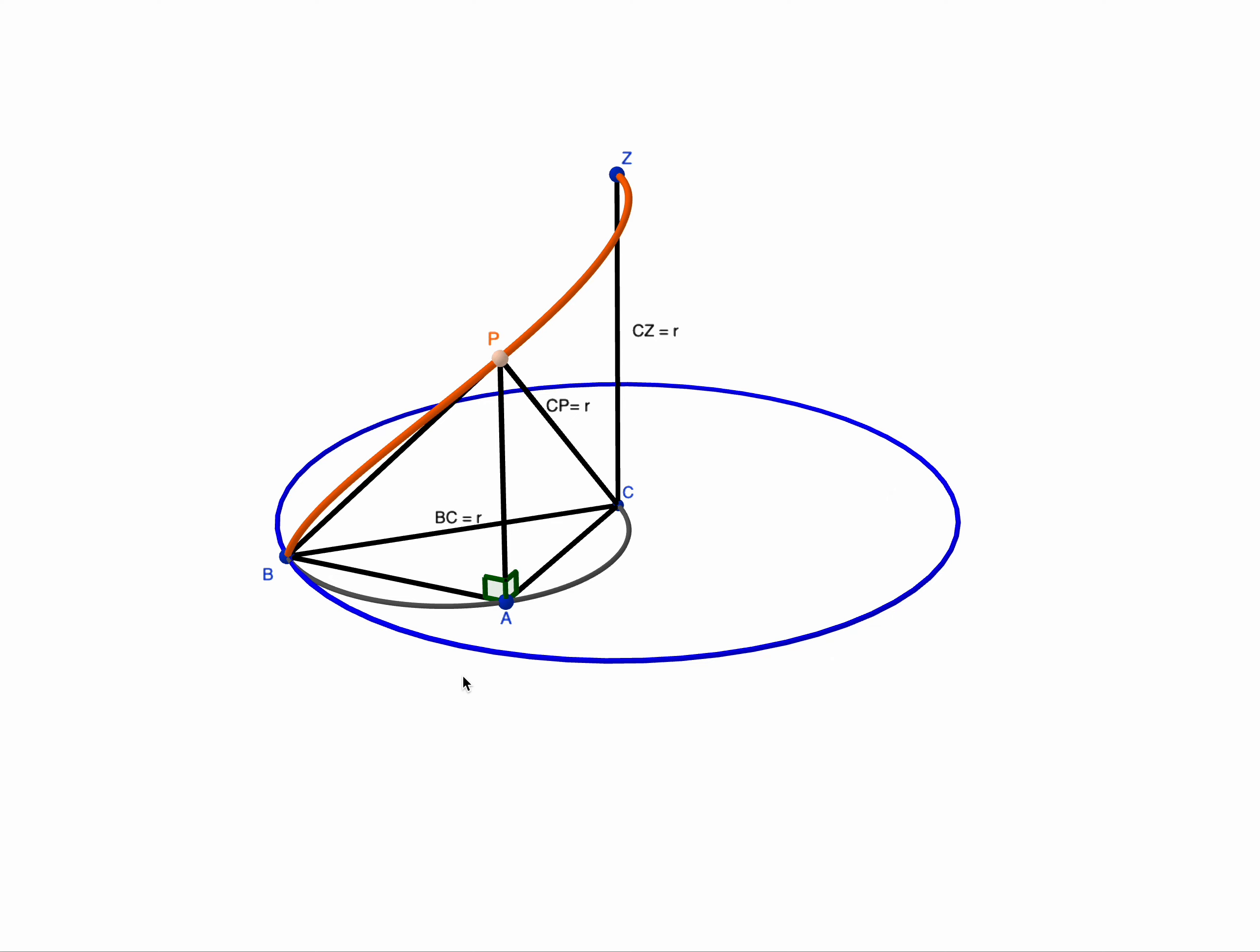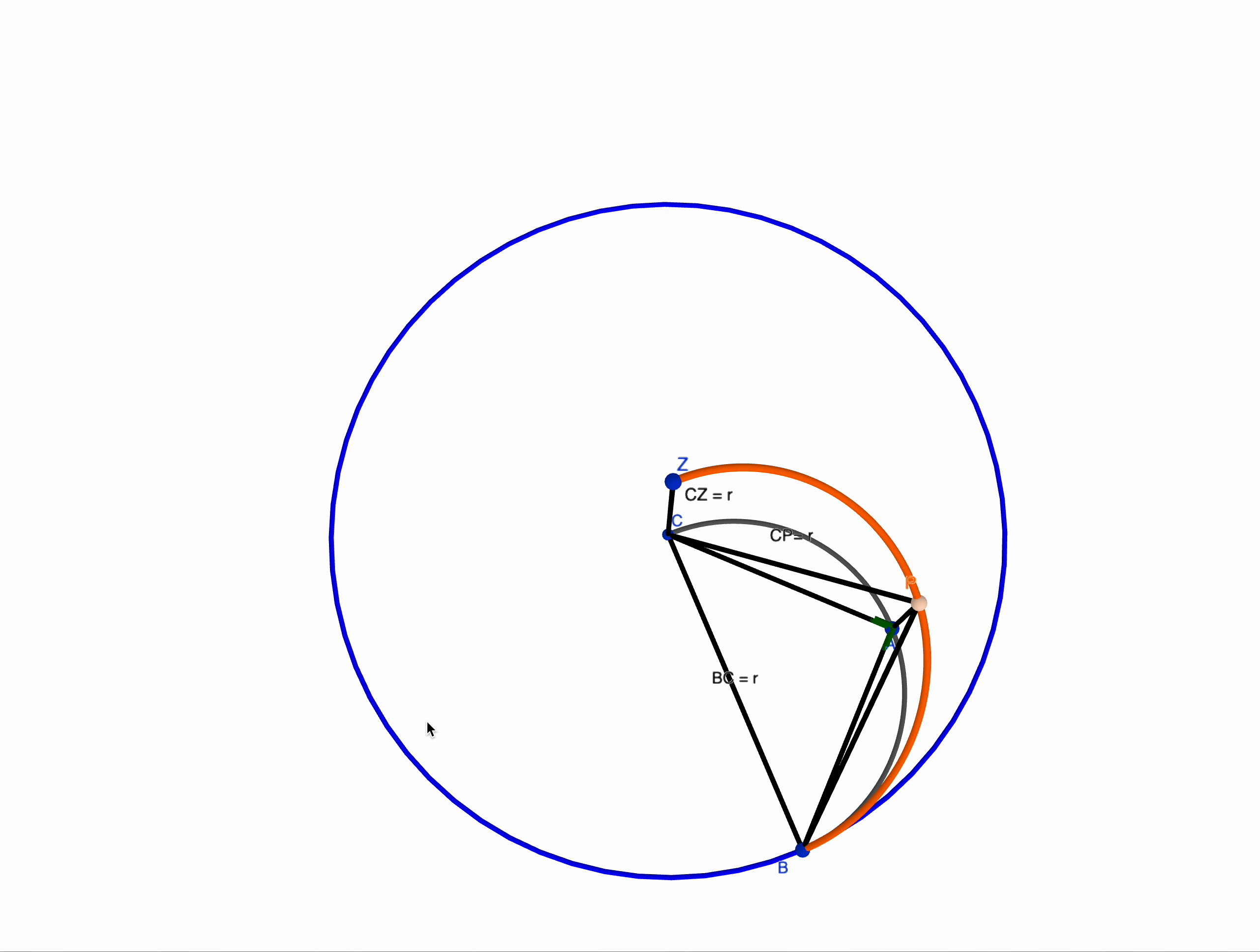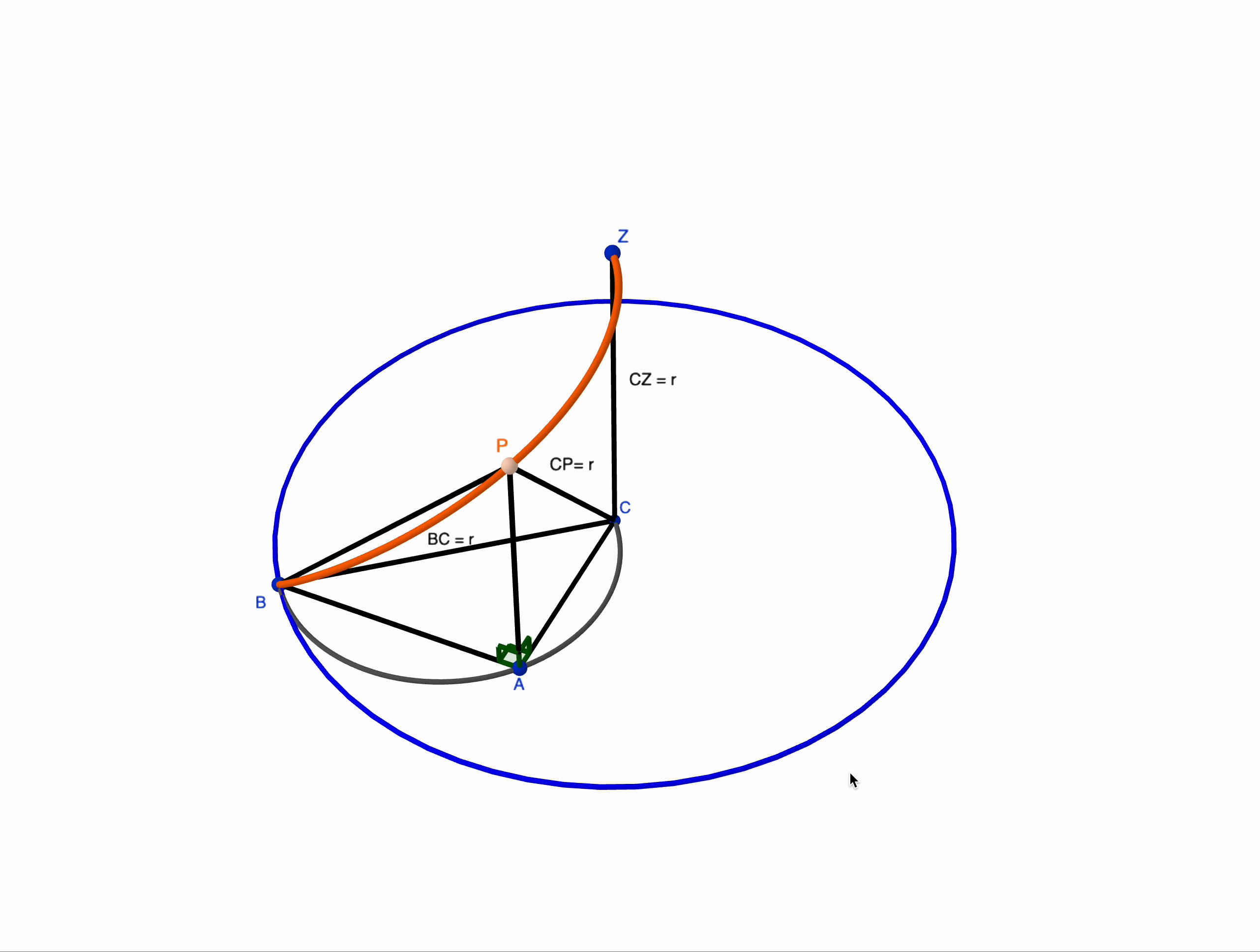PAC and PAB are both right angles because we're projecting down. Now you might also have figured that there's another right angle going on here, and that is the right angle we get from the angle in a semicircle. So an angle in a semicircle is always a right angle. So we've got three right angles going on there.